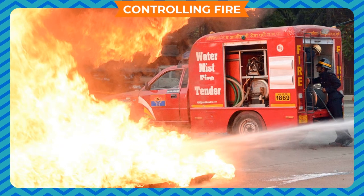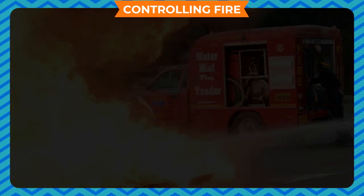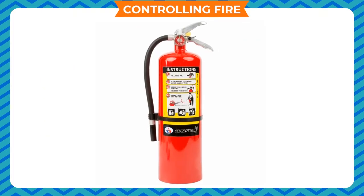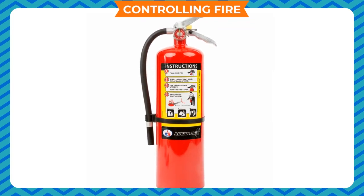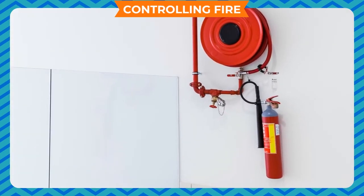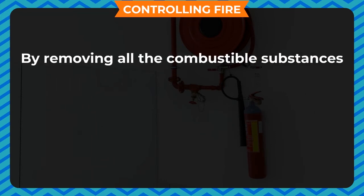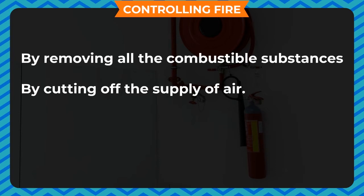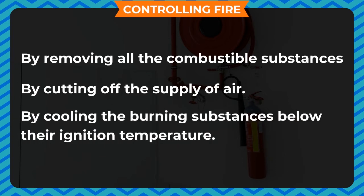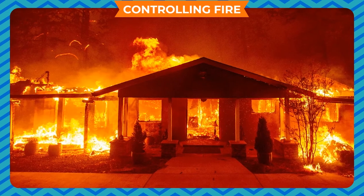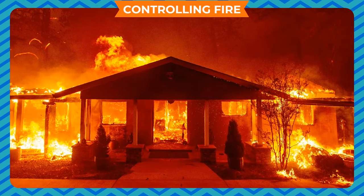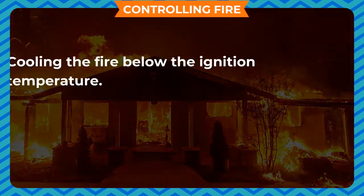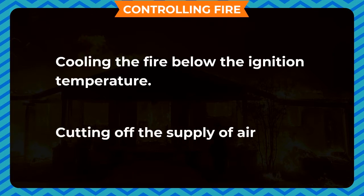Fire can also be controlled by removing any of the three conditions necessary for fire: fuel, air, and heat. A device used to extinguish fire is called a fire extinguisher. You must have seen the red cylinders of fire extinguishers in cinema halls, banks, and other public buildings. A fire may be extinguished by removing all the combustible substances, by cutting off the supply of air, or by cooling the burning substances below their ignition temperature. Since it is not possible to remove all combustible substances from the place of fire, the principles of cooling the fire below ignition temperature and cutting off the supply of air are followed.